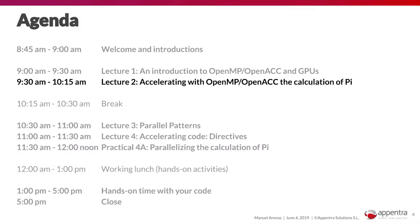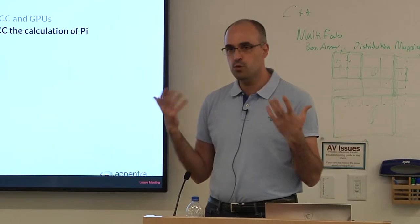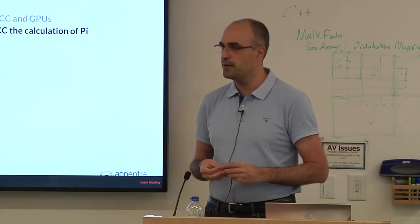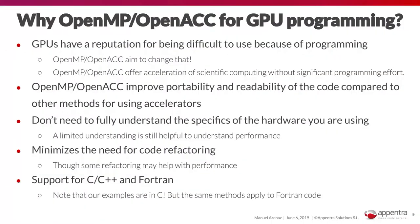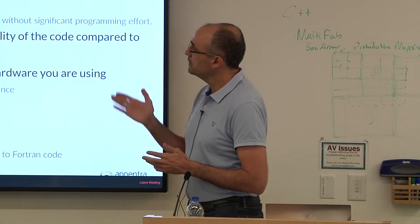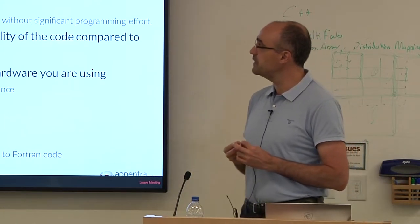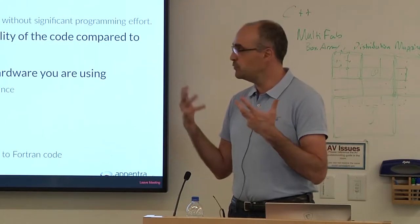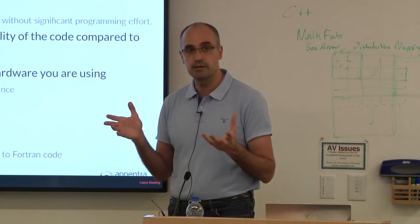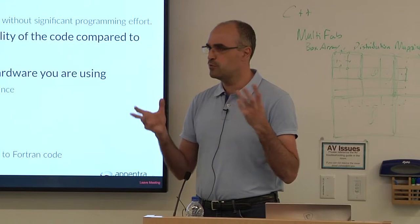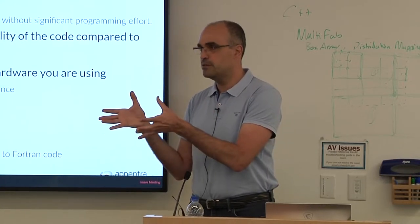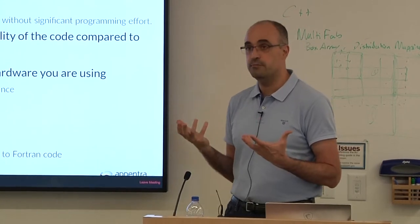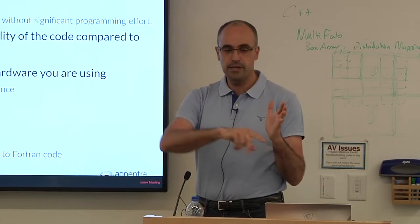Now let's see why to use OpenMP or OpenACC rather than other tools. GPUs have a reputation for being very difficult to program. To achieve peak performance using CUDA or OpenCL, you have to completely rewrite your code — rewrite data structures, recode algorithms and loops to adapt everything to the hardware. OpenMP and OpenACC help bridge that gap by providing a set of directives and a simple API that you can use incrementally to add GPU-enabled parts without rewriting the whole code as required by lower-level tools like CUDA or OpenCL.